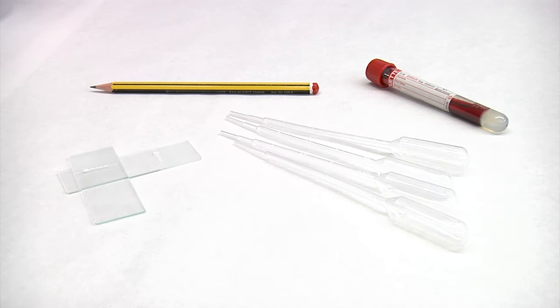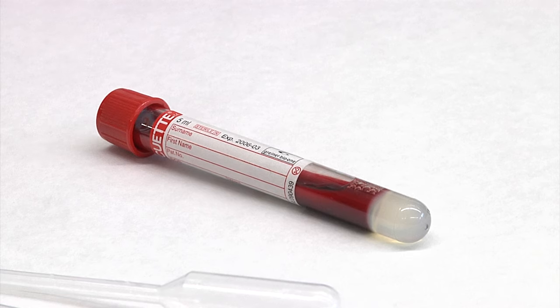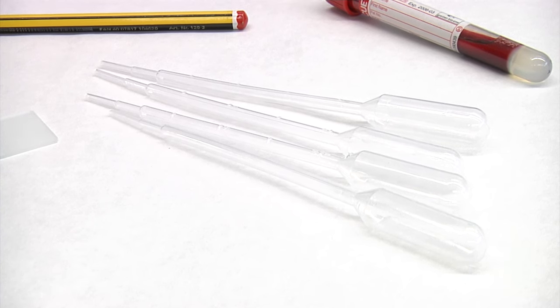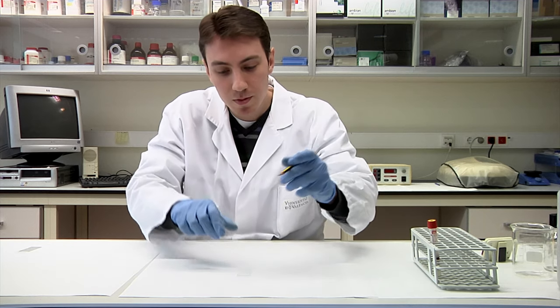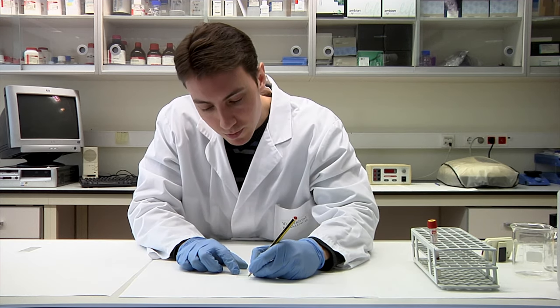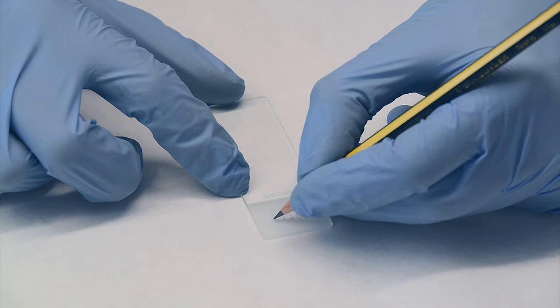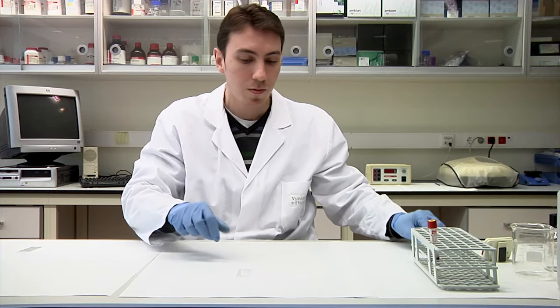The materials that we are going to use to make a blood smear are a blood sample, two slides, and a Pasteur pipette. We place a clean glass slide on a flat surface, for example on the laboratory bench, and first of all we label the frosted area with a pencil.